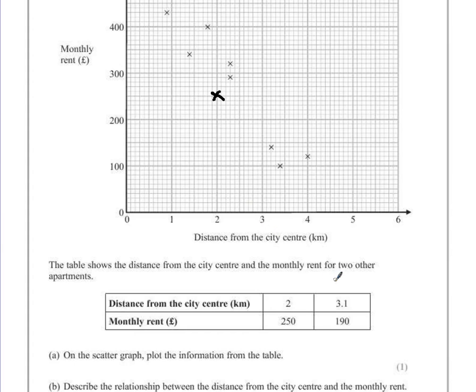Our second point is 3.1. Now we've got ten lines here, so each of the lines represents 0.1 of a kilometer. So 3.1 is the next line after three. The monthly rent is £190, which is one line below £200. Because if there are ten lines, each line represents £10.